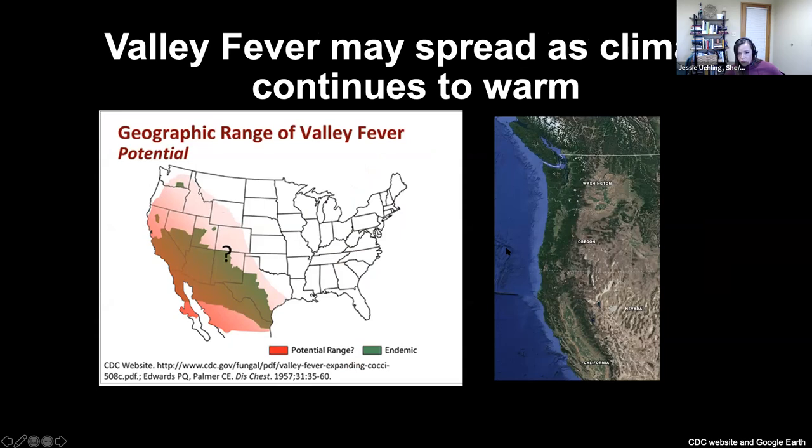I grabbed a screenshot of Google Earth here. We all know that this stretch of desert region in Eastern Washington and Oregon is contiguous with the east side of the Sierra, so this is all pretty much Coccidioides country. I'm hoping that in the future my lab can document the presence of Coccidioides in Oregon.